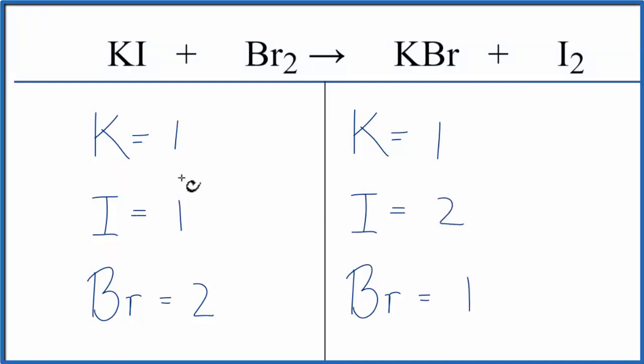Looks like we could fix our iodines first by putting a 2 in front of the KI. This 2 applies to everything, so 1 times 2 for the K, but the iodine, 1 times 2, that gives us 2. So we balance the iodine.